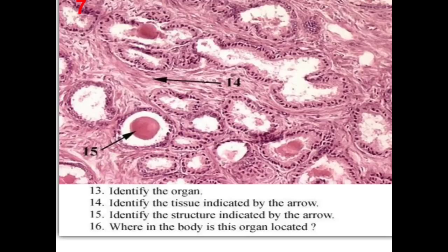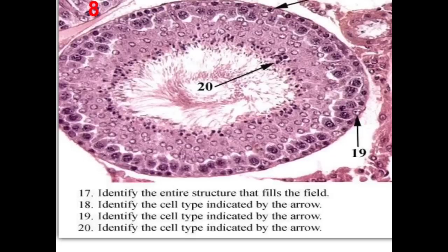Identify the organ — this is the prostate, because it has acini with characteristic folding separated by fibromuscular tissue. Identify the tissue indicated by the arrow — fibromuscular septa. Identify the structure inside — prostatic concretions. Where in the body is this organ located? It is present at the base of the urinary bladder, wrapping the upper part of the male urethra.